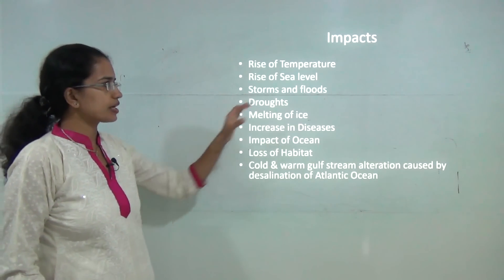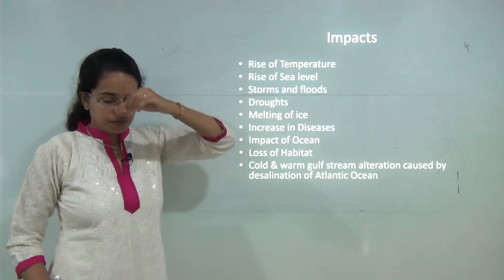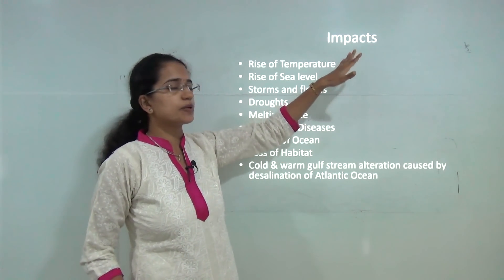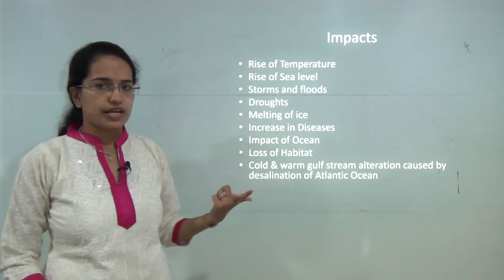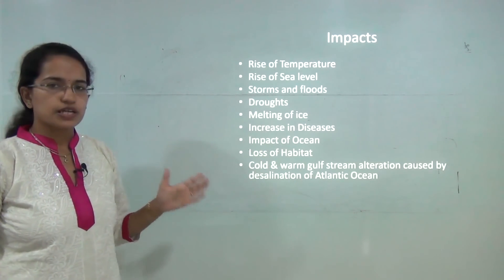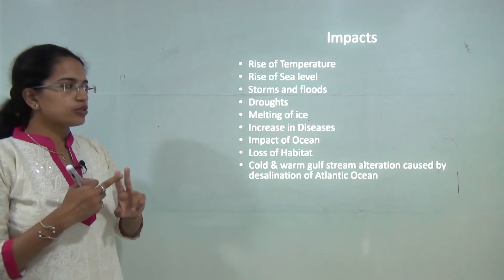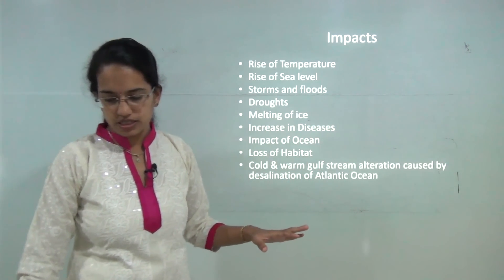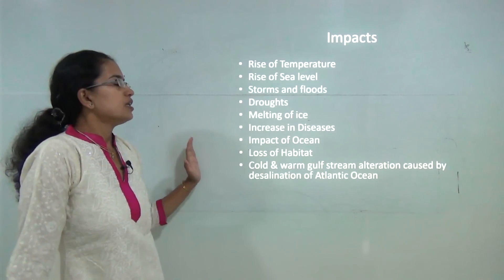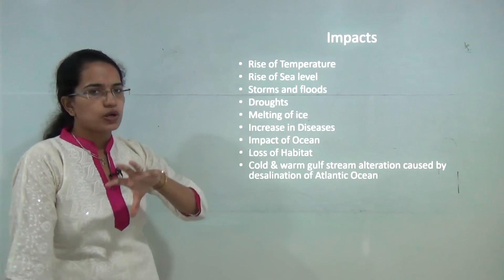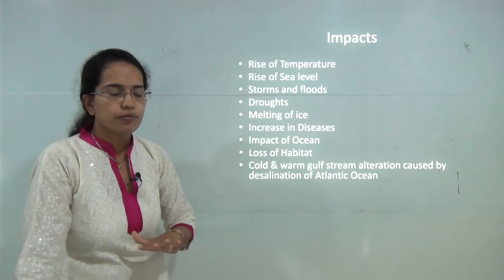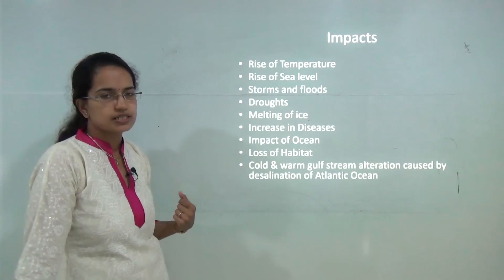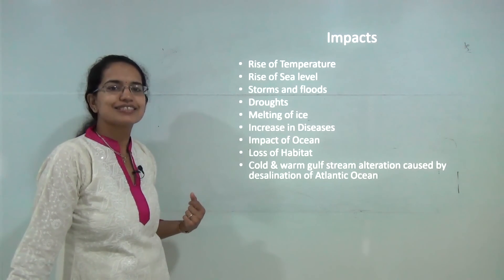In 2015, burning of fossil fuels for electricity was the major source of emissions in the United States, with transportation as the second major contributor. Both need to be curbed, as addressed in the Kyoto Protocol and the Paris Agreement. This was the basic overview of greenhouse effect and global warming; more important environment topics will be covered in subsequent lessons.